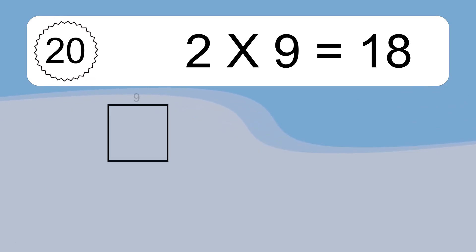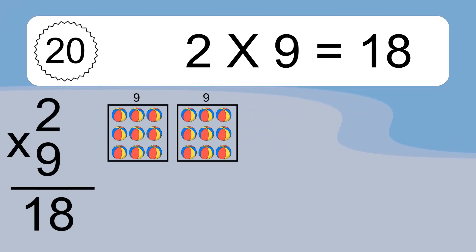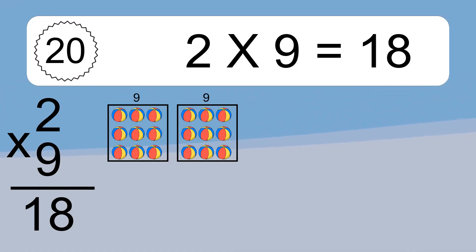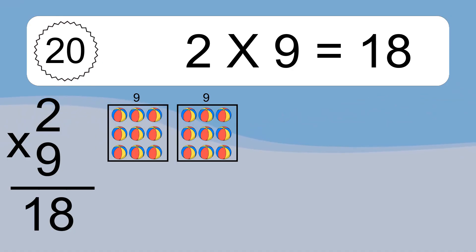2 times 9 equals what? 2 times 9 equals 18. We have 2 boxes, and each box has 9 colorful balls inside. If you count all the balls in all the boxes together, you will have 2 times 9 balls. This equals 18 balls.